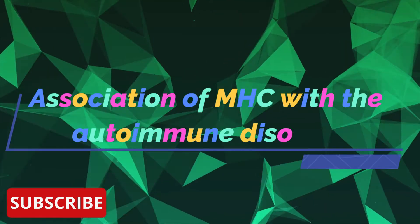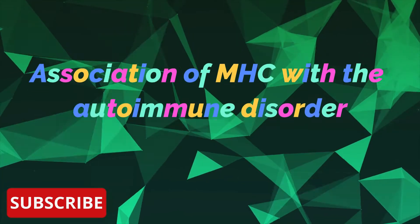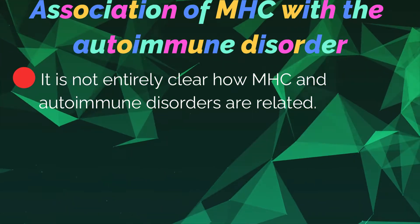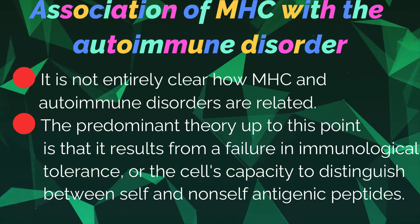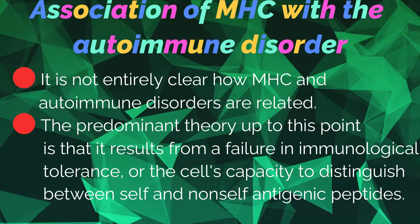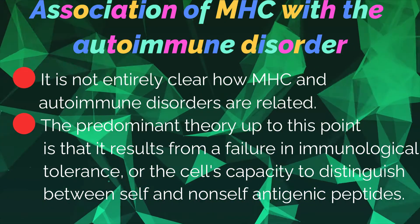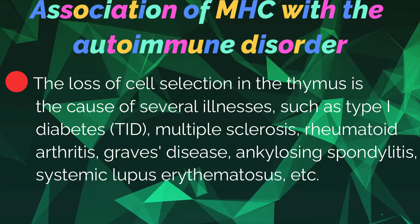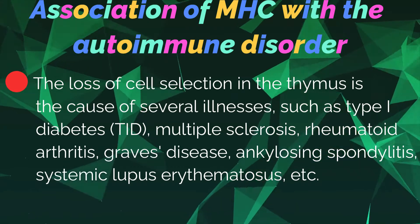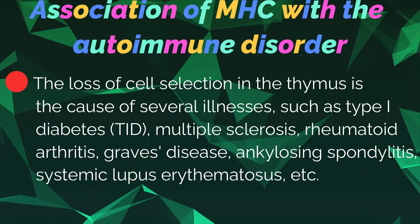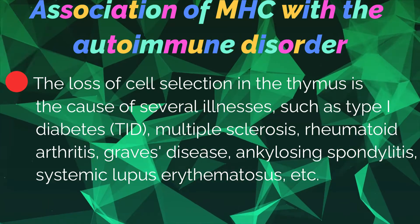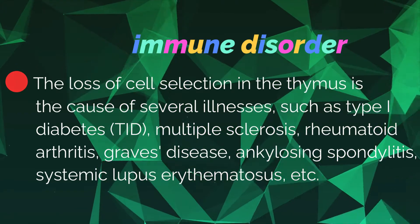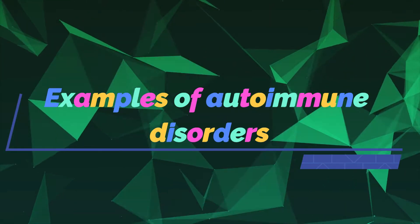Association of MHC with autoimmune disorders: it is not entirely clear how MHC and autoimmune disorders are related. The predominant theory is that it results from a failure in immunological tolerance — the cell's capacity to distinguish between self and non-self antigen peptides. The loss of cell selection in the thymus is the cause of several illnesses such as type 1 diabetes, multiple sclerosis, rheumatoid arthritis, Graves' disease, ankylosing spondylitis, and systemic lupus erythematosus.